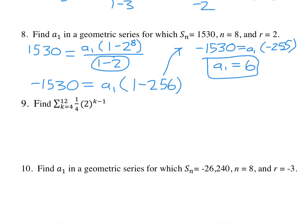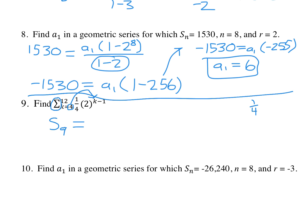Number 9 doesn't look like it has a question, but when you see the summation symbol, that means you're finding a sum. There are 12 minus 3 terms, so there are 9 terms. To find a1, you plug in 4 for k. So this is 1/4 times 2 to the power of k minus 1, which is 4 minus 1, which is 3. So we have 1/4 of 8, which is 2. So our a1 is 2.